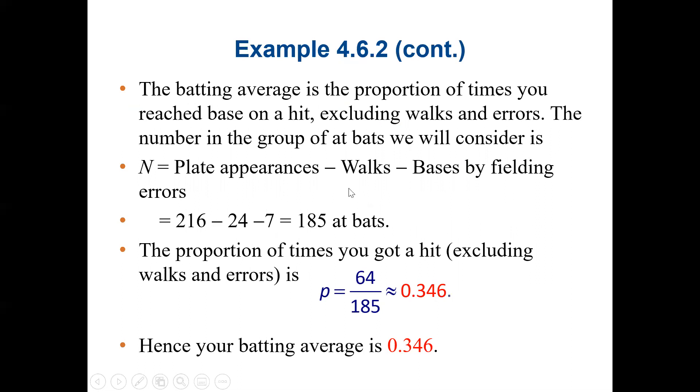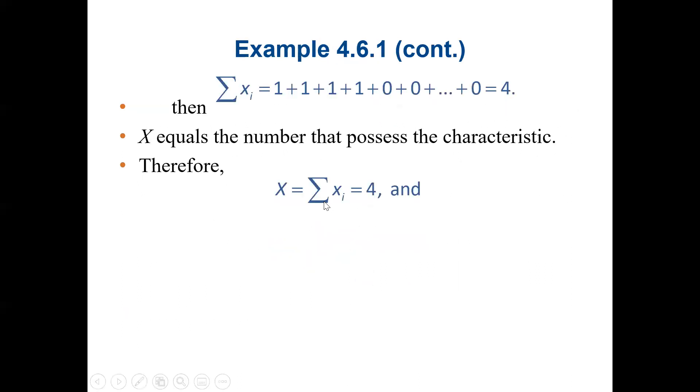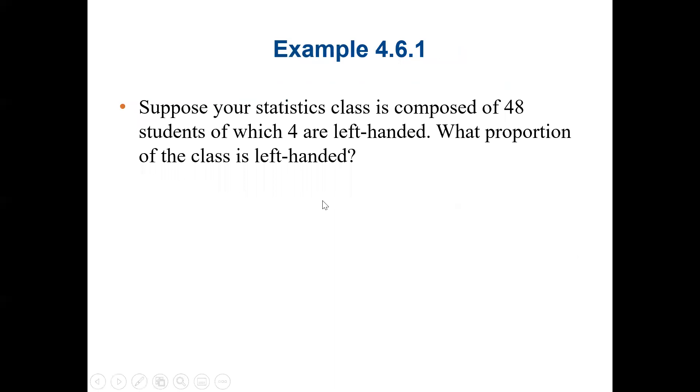Now, to find the proportion, it's more or less like finding part of a whole something. In this example, we have students - in the previous example, we have total students in the class, which is 48 students. That will be our N. Then 4 are left-handed, so the characteristic will be 4. So 4 divided by 48 will give us the proportion.